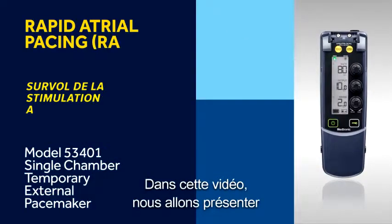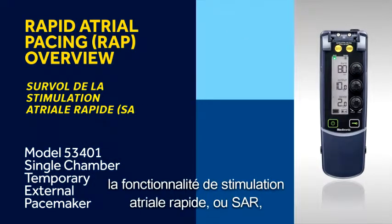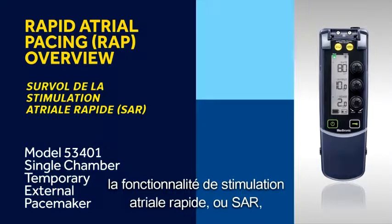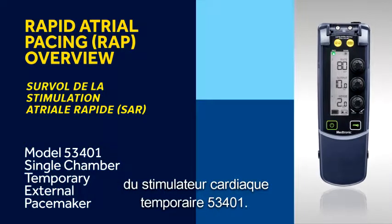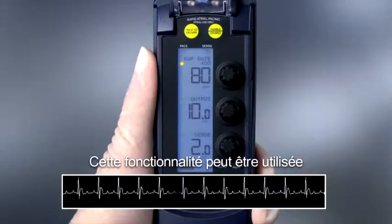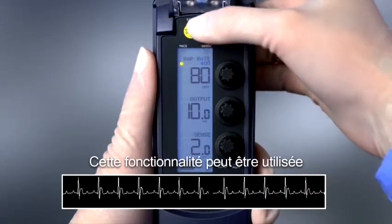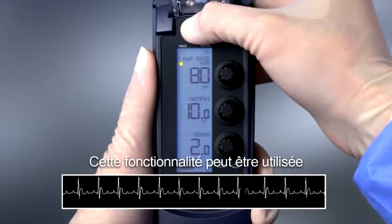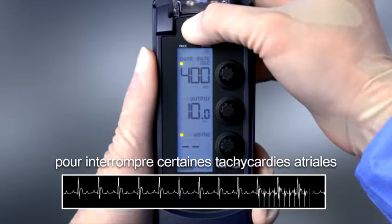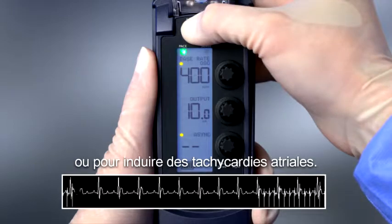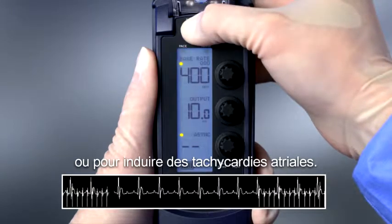In this video, we will demonstrate the rapid atrial pacing feature of the 53401 Temporary Pacemaker, which is often referred to as RAP. This feature can be used to interrupt some atrial tachycardias or induce atrial tachycardias.